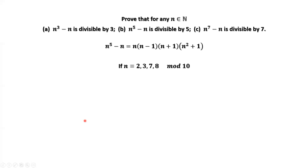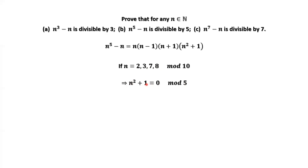We now consider the remaining last digits: 2, 3, 7, and 8. For these we use the factor N squared plus 1. If the last digit is 2, then 2 squared is 4, and 4 plus 1 is 5, which is divisible by 5. If the last digit is 3, then 3 squared is 9, and 9 plus 1 is 10, which is divisible by 5. If the last digit is 7, then 7 squared is 49, and 9 plus 1 is 10, divisible by 5. If the last digit is 8, then 8 squared is 64, and 64 plus 1 is 65, which is divisible by 5. We have covered all possible last digits, so N to the power of 5 minus N is divisible by 5.